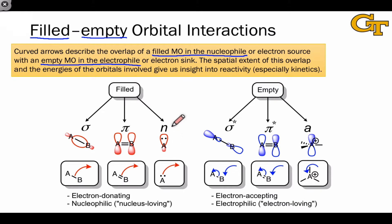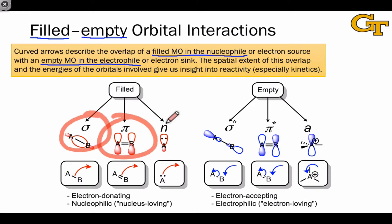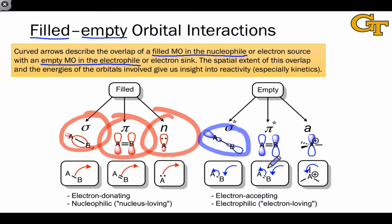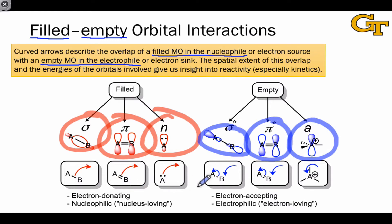Because the numbers and types of these orbitals are limited, we can actually enumerate all the possibilities just by identifying the three different types of filled molecular orbitals — sigma, pi, and n — and the three types of empty molecular orbitals — sigma-star, pi-star, and empty atomic orbital (a). Each of these, as you see in the pictures, is associated with a specific type of electron flow.